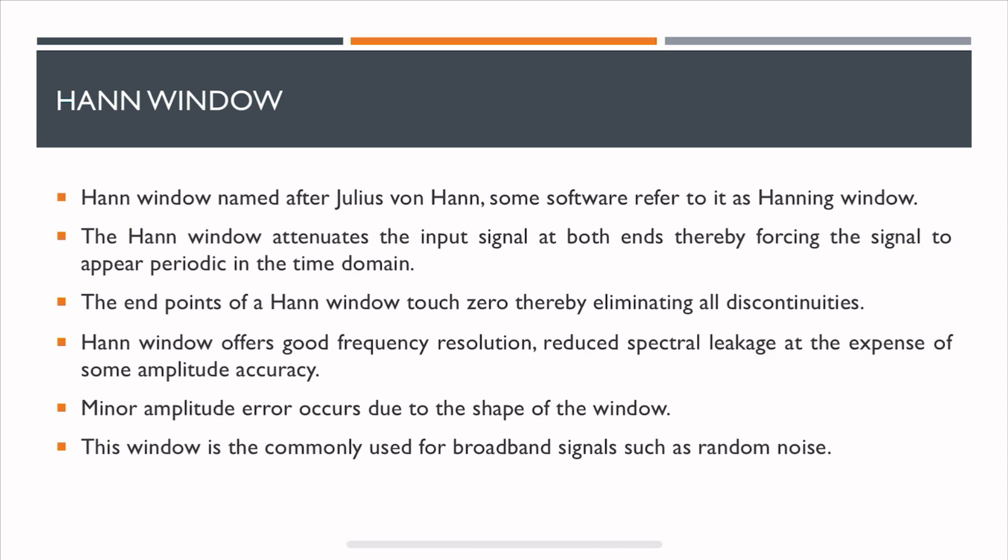Also, it ensures that the signal is continuous in the time domain because the endpoints are attenuated. The Hann window offers good frequency resolution, reduced spectral leakage, but at the expense of some amplitude accuracy. There is minor amplitude error due to the shape of the window. It's commonly used for broadband signals, just random noise.